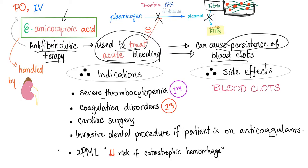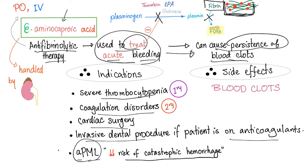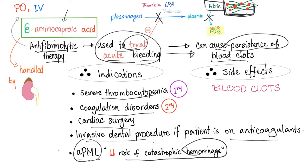Indications — bleeding, of course. Severe thrombocytopenia causing bleeding. Coagulation disorders causing bleeding. Cardiac surgery, which can cause bleeding. Invasive dental procedures if the patient is on anticoagulants. Acute promyelocytic leukemia — in APML there is a risk of catastrophic hemorrhage, and aminocaproic acid is the hero to decrease the risk of this catastrophe.